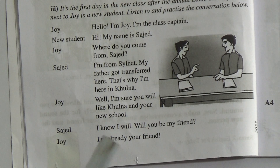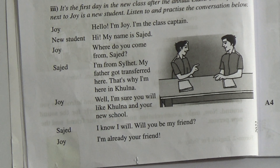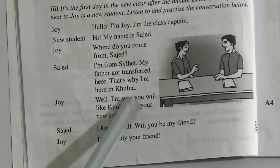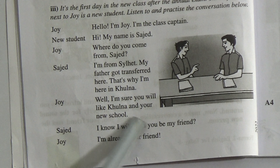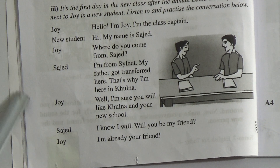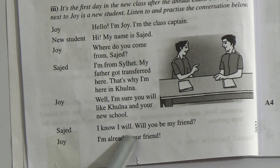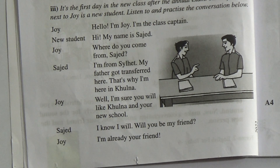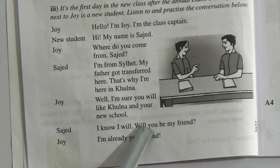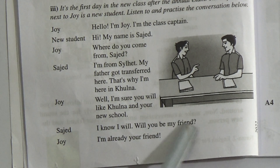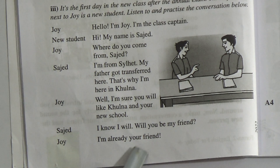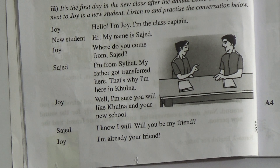As a result, Sajid and Joy are staying in Khulna, in a school, in a class. Then Joy said: Well, I am sure you will like Khulna and your school. Then Sajid said: I know I will, because he also loves Khulna. I like this. Will you be my friend? Joy replied: I am already your friend. That means Joy assured Sajid that he is already his friend.